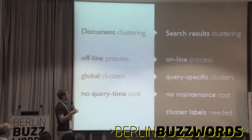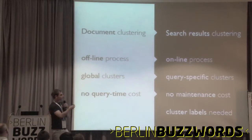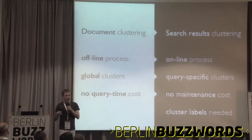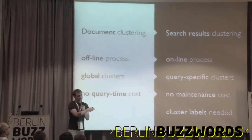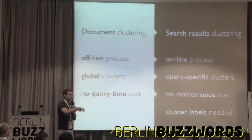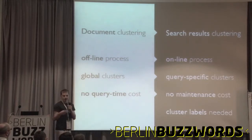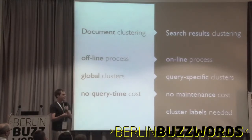I'd like to highlight a few differences between document or collection clustering and search results clustering — these are actually quite complementary. For document clustering, you want to cluster the whole collection. There are probably a lot of documents, so it's going to be an offline process. Search results clustering, on the other hand, has to be an online process done in real time. In document clustering, you get what I call global clusters: you create them once and they're static.